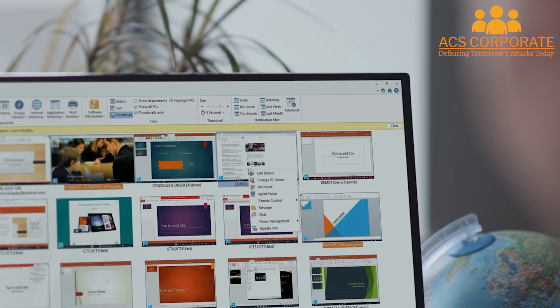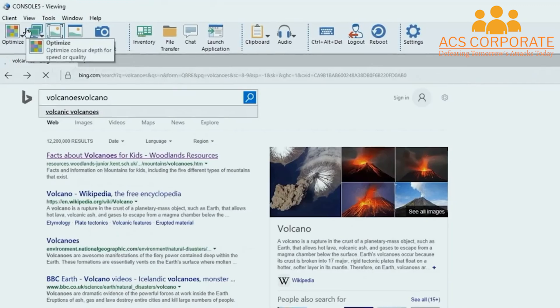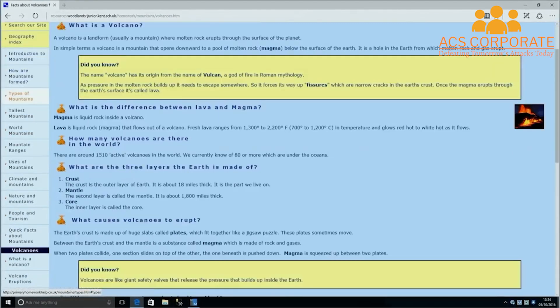Selecting any PC allows you to power it off or on, launch a remote command prompt or PowerShell, chat, transfer files, or initiate one-to-one remote control.